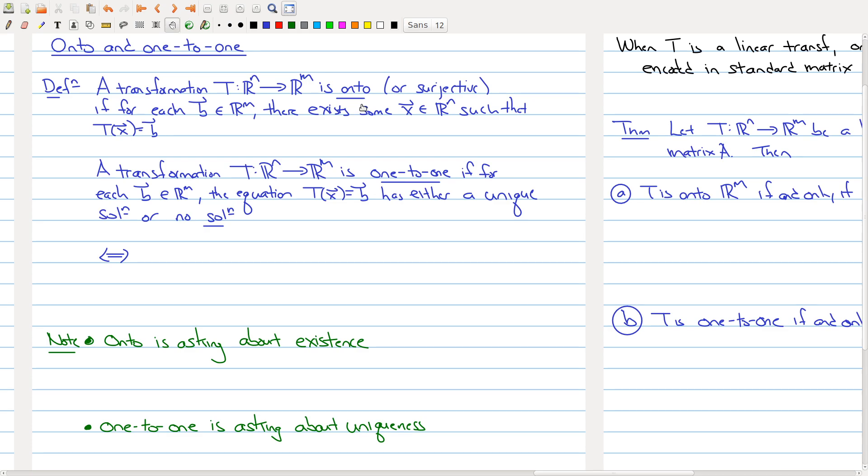So a transformation is onto if for each b in the codomain there exists some x that maps over to that b. So that's the definition of onto. And a transformation is one-to-one if for each element in the codomain the equation either has a unique solution or no solution at all.